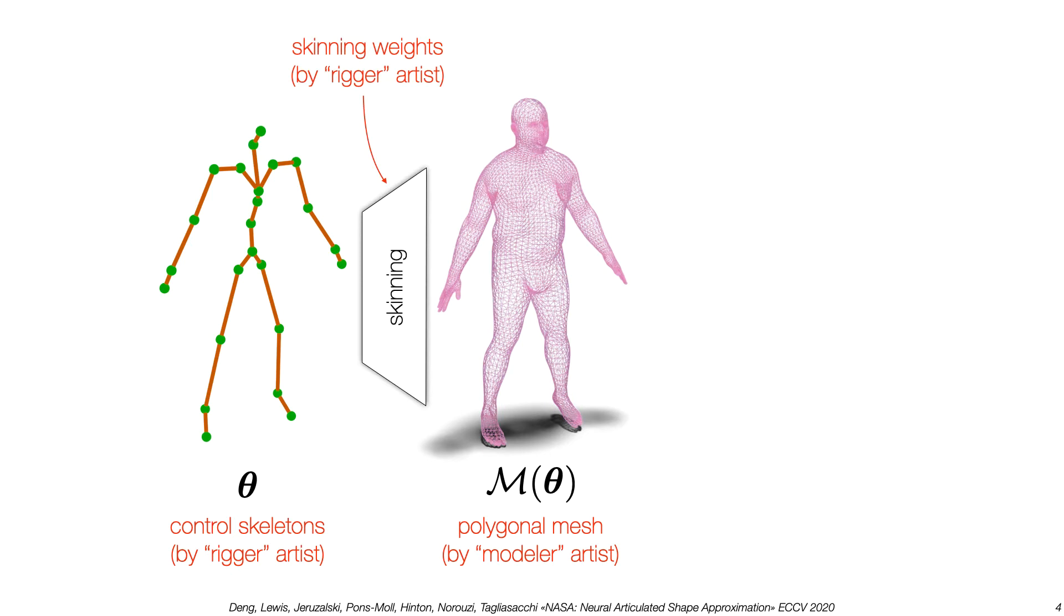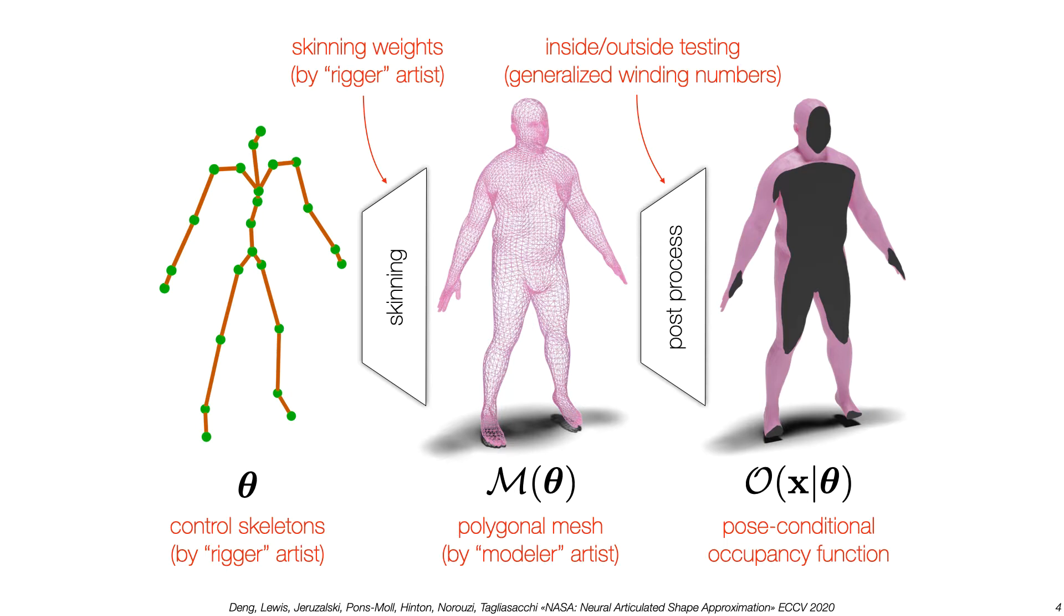The notion of inside-outside is important in many applications, but post-processing meshes to compute occupancies is non-trivial and computationally intensive. When self-intersections exist, it might be as difficult as computing generalized winding numbers.